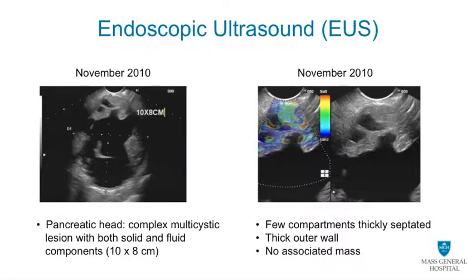A subsequent endoscopic ultrasound confirmed the presence of a complex, solid, and cystic lesion in the pancreatic head. There were several cystic spaces with thick walls but no real cyst wall mass. A fine needle aspiration biopsy was performed during the procedure, aspirating fluid for biochemical analysis and targeting the thick cyst wall for cytology.